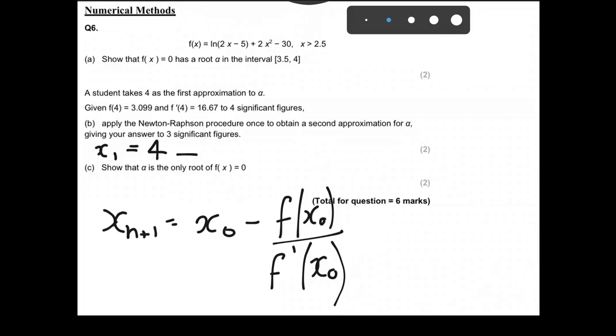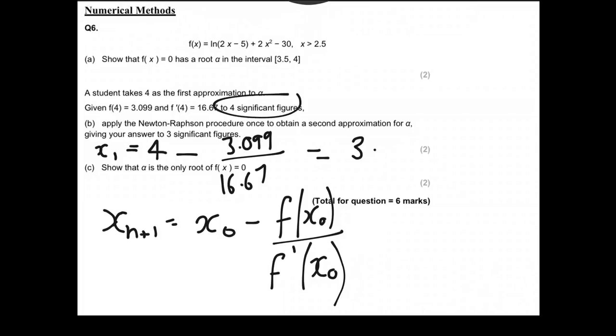Divided by f'(4), which is 16.67. So we pull down the calculator: 4 take away 3.099 over 16.67, and we get 3 point, we want it to 4 sig figs, that's 3.8114 to 4 significant figures.